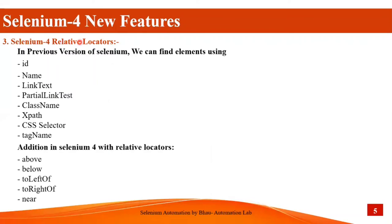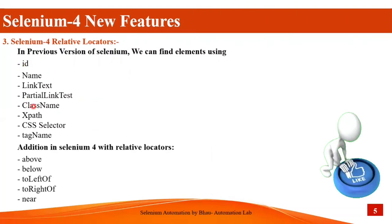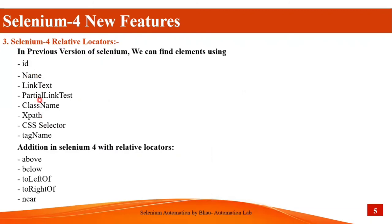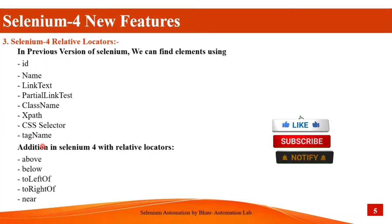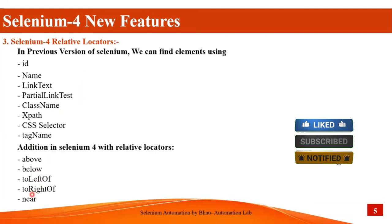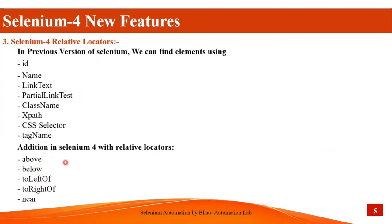Selenium 4's new features include Relative Locators. In previous versions of Selenium you could find elements using ID, name, link text, partial link text, class name, XPath, CSS selector, and tag name. Now in Selenium 4, you can use all those locators as well as the additional relative locators: above, below, to left of, to right of, and near. These additional locators are added to the locator list in Selenium 4 and we will see them practically.